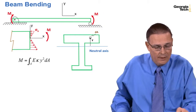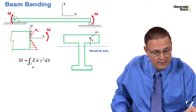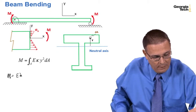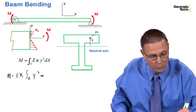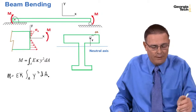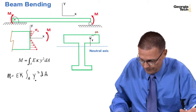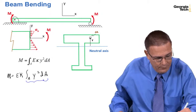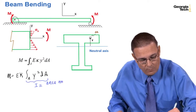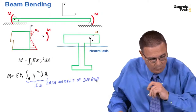Taking E, the Young's modulus, which is constant, and kappa, which is constant, outside the integral, we have M equals E · kappa times the integral over the area of y² dA. That integral is defined as I — the area moment of inertia, or second moment of area. Remember the first moment of area was the integral of y dA; the second moment of area is the integral of y² dA. This quantity is given the symbol I and defined as the area moment of inertia.